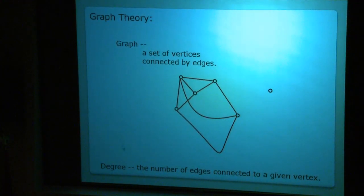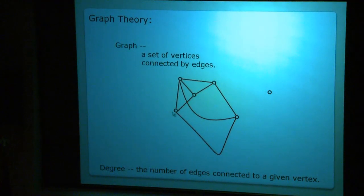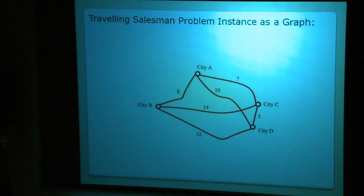For example, this vertex is degree 3, and this one is disconnected as degree 0. And that's how we can represent the traveling salesman problem using a graph. We have four cities which are assigned to four vertices, and then edges connecting them hold the values of the distances.